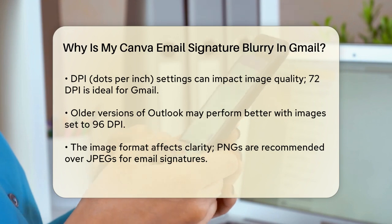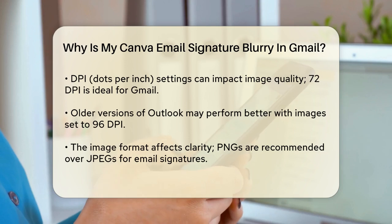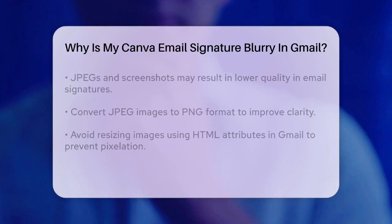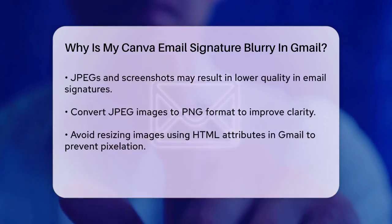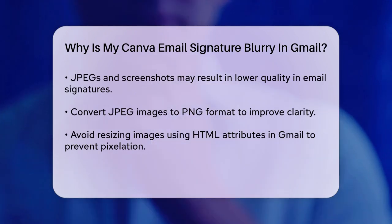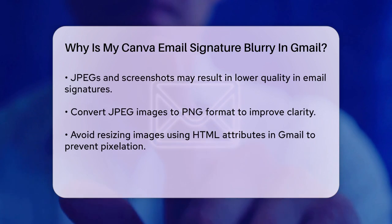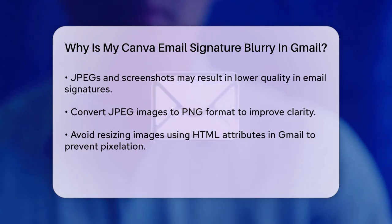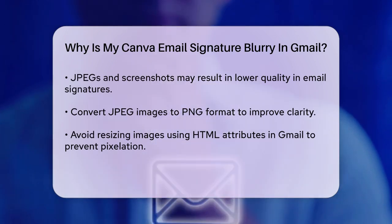The format of your image is also important. JPEGs and screenshots can sometimes look mediocre within email signatures. PNGs are generally a better choice because they support transparency and tend to maintain high quality. So, if you're using a JPEG, try converting it to a PNG and see if that improves the clarity.